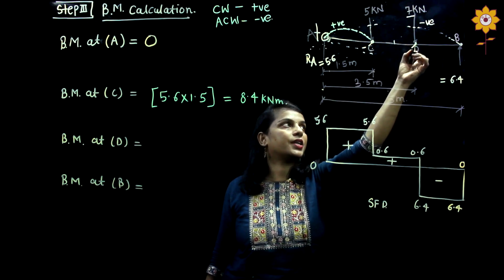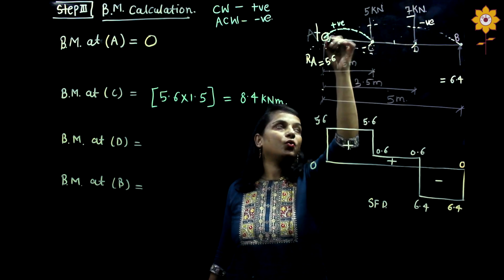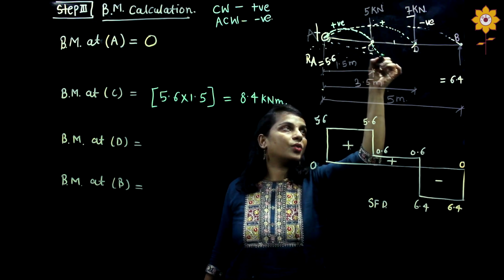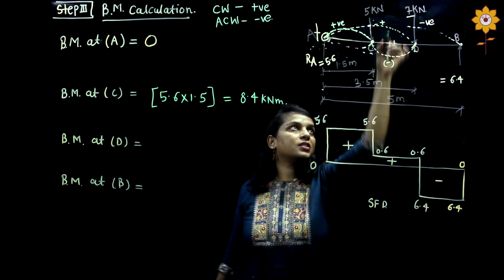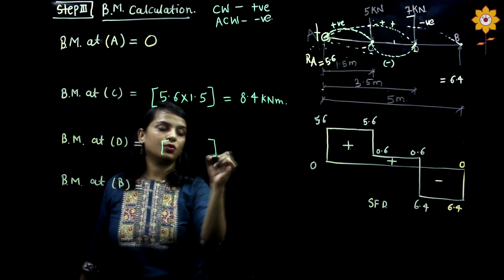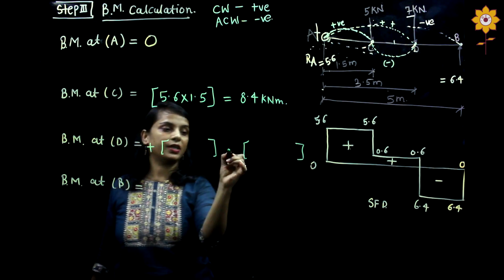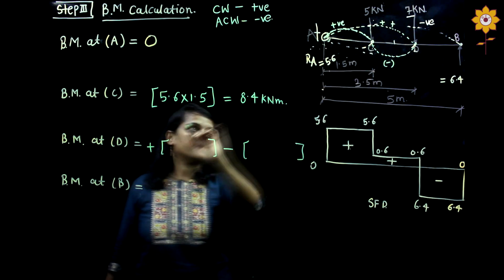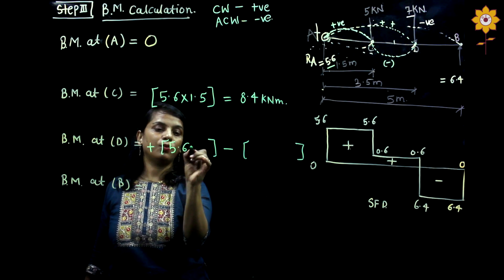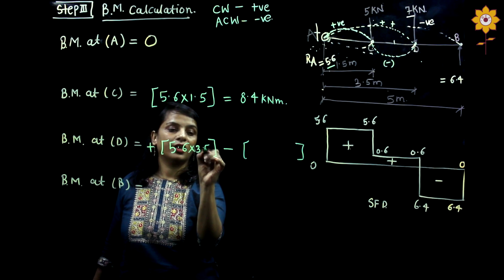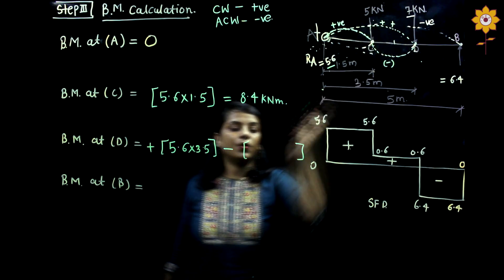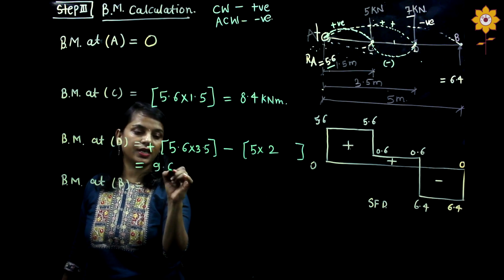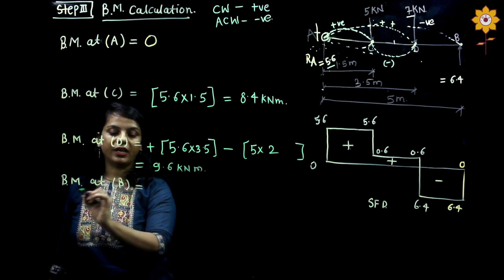Bending moment at point D: there are two forces acting to the left of D. The first force RA rotates clockwise (positive) and the second force of 5 kN rotates anticlockwise (negative). BM at D = (5.6 × 3.5) minus (5 × 2.0) = 19.6 minus 10 = 9.6 kilonewton metre.